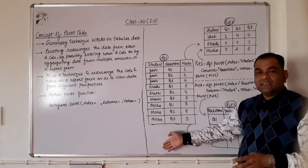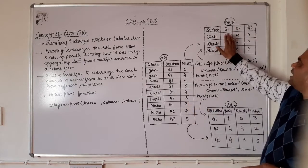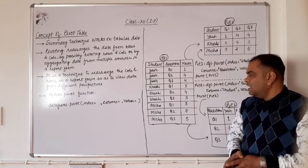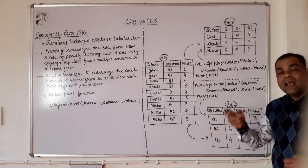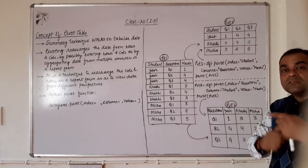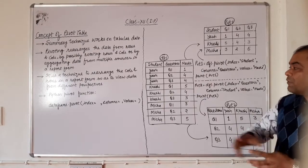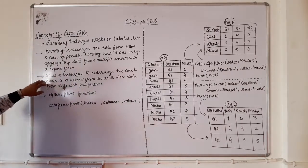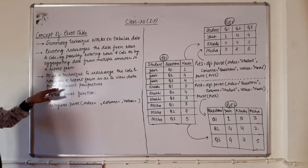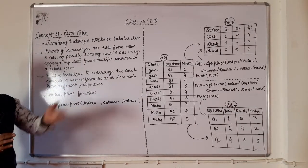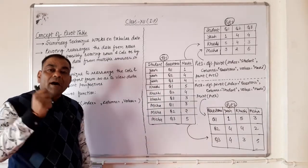In the first example data frame, student is the index, the question column is divided into multiple columns, and marks are the values. In the second data frame, questions are treated as the index instead. Rows and columns are rearranged so that we can get a report form from a given data frame. It is a technique to rearrange columns and rows so as to view data from different angles.